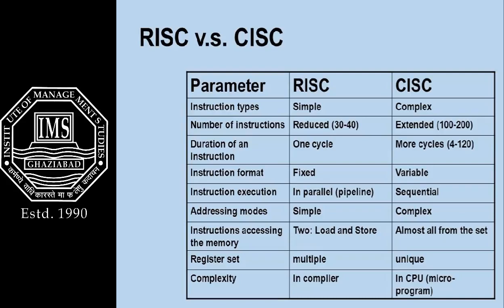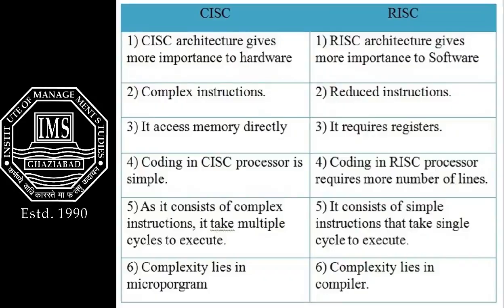Register set: RISC uses multiple register sets whereas CISC uses a unique register set. Complexity in RISC lies within the compiler, whereas in CISC architecture complexity lies within the CPU or microprogram. Further, CISC architecture gives more importance to hardware whereas RISC gives more importance to software.